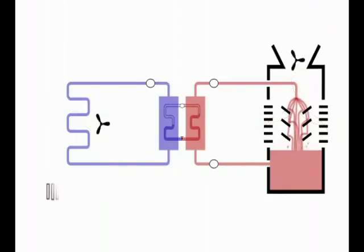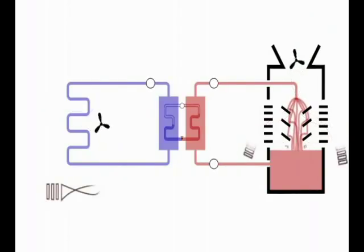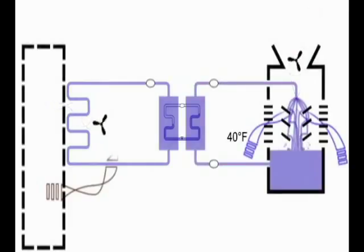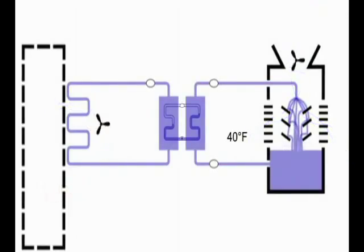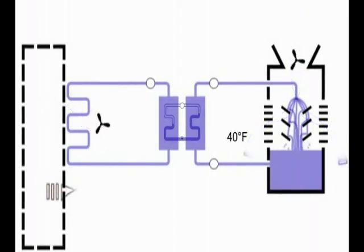In a water side economizer mode, cold air cools, and it really cools because it's winter, the water in the cooling tower. That cold water moves to the condenser side of the chiller and cools the coolant.